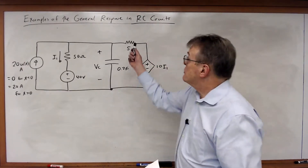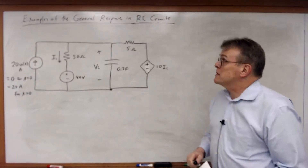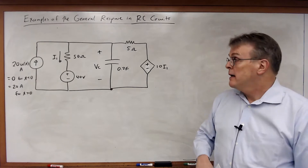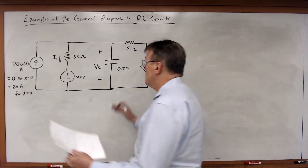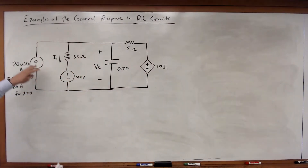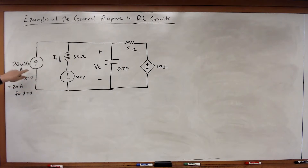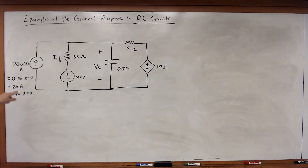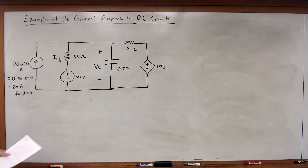Let's look at a couple of examples of the general response in RC circuits. Let's first begin with this circuit, and notice that instead of using a switch in this circuit, I'm using a source multiplied by the unit step function. So this is equal to zero for t less than zero, and it's equal to 20 amps for t greater than zero. So let's go through and solve for this.